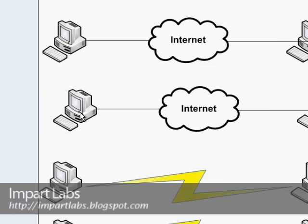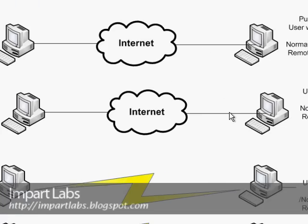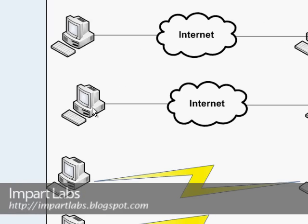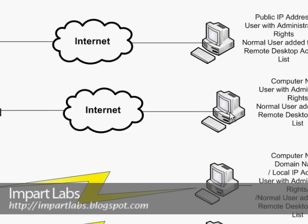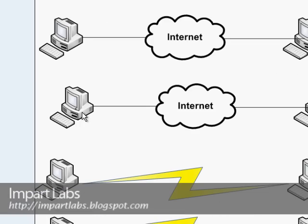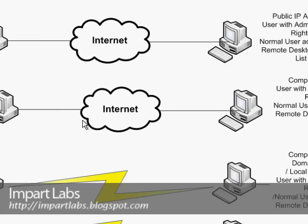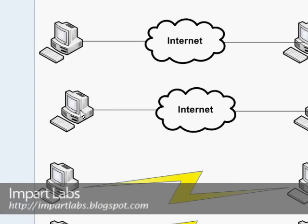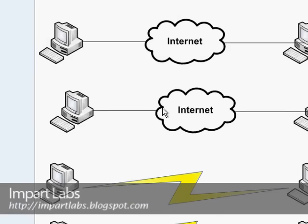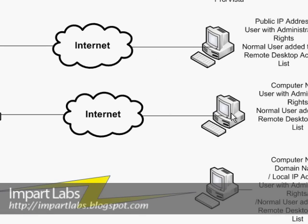The second scenario is where you want to remote desktop to a network via a VPN server. For those who know what a VPN server is: the person connecting would simply connect to the VPN server, which creates a tunnel between you and the VPN server, making you part of that network. You would then be able to remote desktop to that computer using the local IP address or the name of the computer.